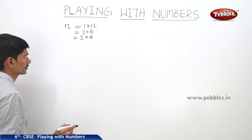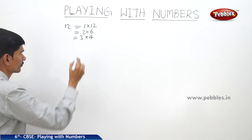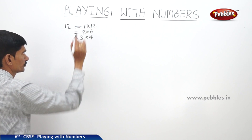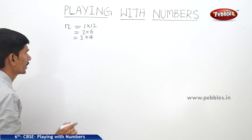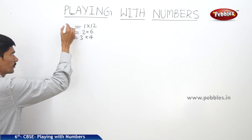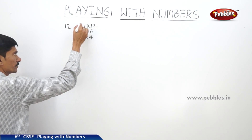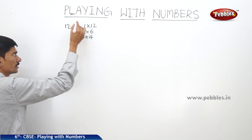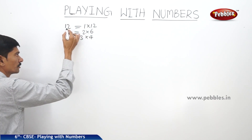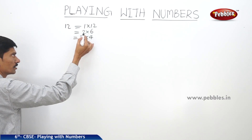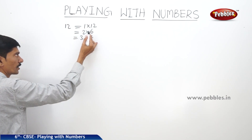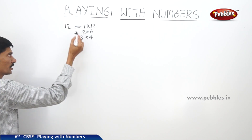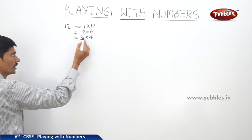So the factors of 12 are 1, 2, 3, 4, 6, and 12. Here 12 is the product of 1 and 12, so 12 is the multiple of 1 and 12. 12 is also the multiple of 2 and 6, and 12 is also the multiple of 3 and 4.